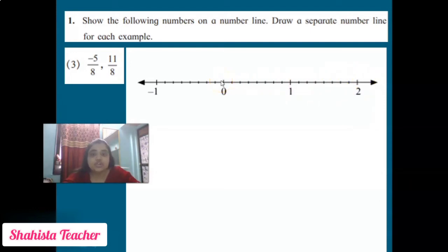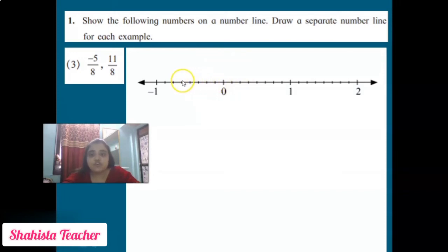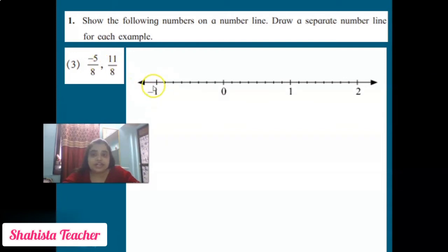Now we move to the negative side, which is the backward side. From zero, don't count zero, go backward: 1, 2, 3, 4, 5, 6, 7, 8 — on the 8th position we put minus 1 because it is the negative side.